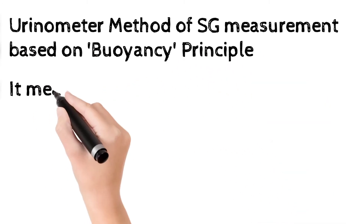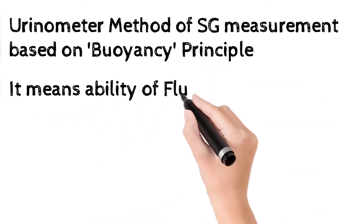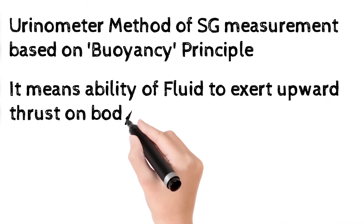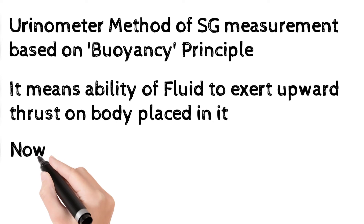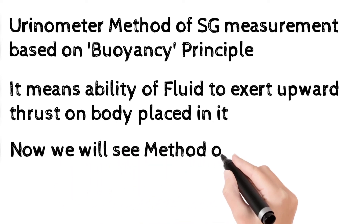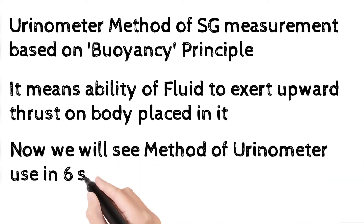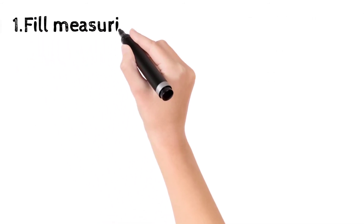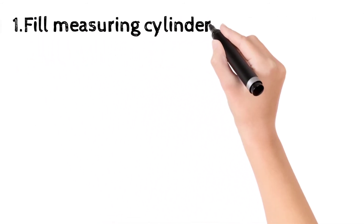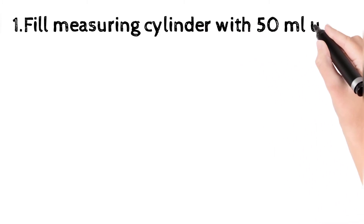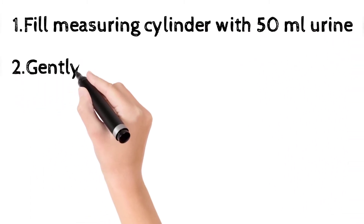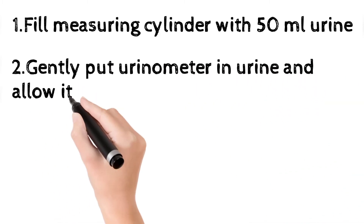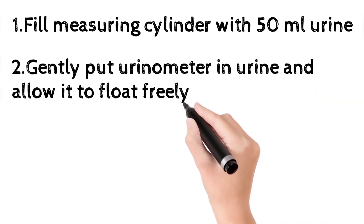Now we will see the urinometer method for specific gravity measurement. It is totally based on the buoyancy principle, which states that it is the ability of a fluid to exert an upward thrust on a body when it is placed in it. The method has six steps. First, fill the measuring cylinder with urine — at least 30 to 50 ml of urine is required.